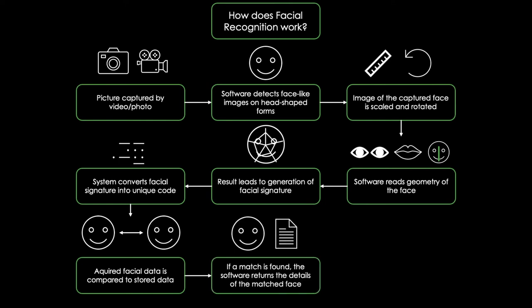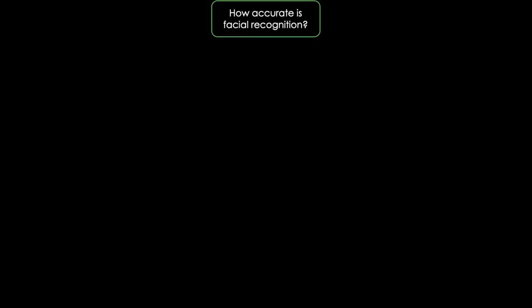Now you might ask yourself how accurate this software is. According to tests facilitated by the National Institute of Standards and Technology, the best face identification algorithm only has an error rate of around 0.08%. In general, face recognition accuracy is higher when the algorithms are used to match people to clear, static images.